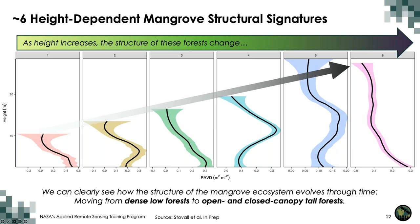In general, we found around six height-dependent mangrove structural signatures. We can see clearly how mangrove forest structure changes with respect to changing forest heights, and how the mangrove ecosystem changes through time and development. The forest goes from a low and dense canopy to either open or closed canopy tall forest, with structural profiles characteristic of what you actually see when walking through that forest.